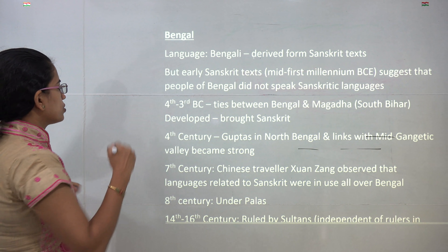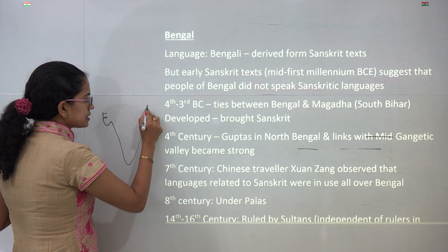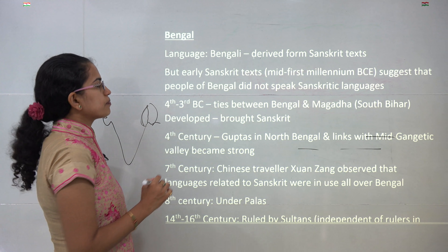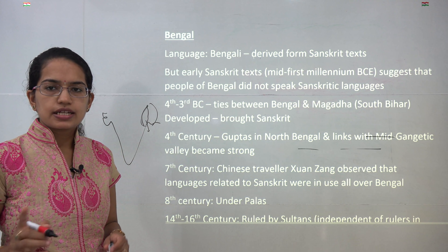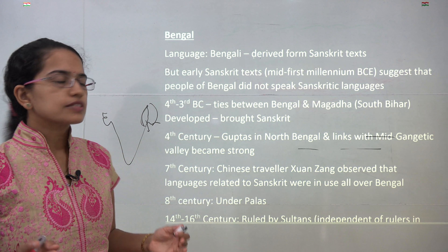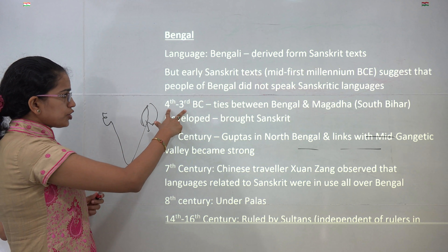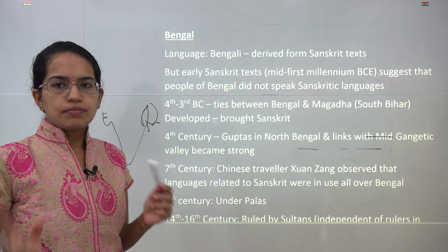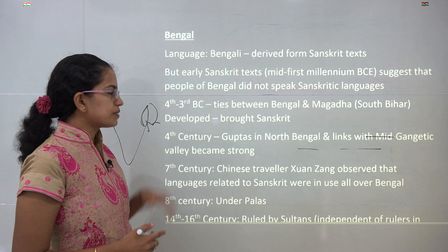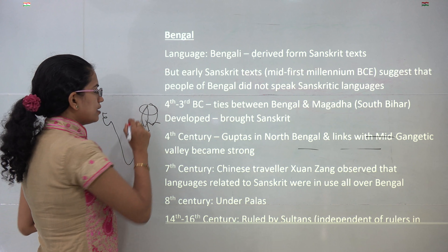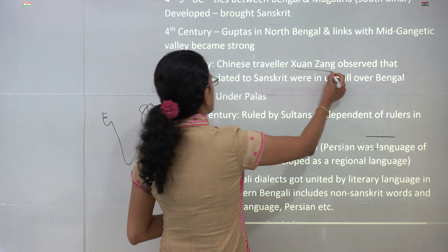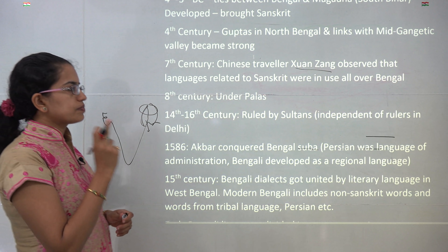Moving to the other corner of India is Bengal. The present-day West Bengal was part of Bengal which included West Bengal and East Bengal during that time. The predominant language was Bengali and most Bengali literature was derived from Sanskrit texts, though some was derived from tribal and other regional languages. During the 3rd and 4th century BC, Bengal and Magadha had good ties — Magadha occupied southern Bihar and brought Sanskrit into the region. During the 4th century, the Guptas occupied northern Bengal and their influence grew far and wide. During the 7th century, the Chinese traveler Xuanzang tried to relate the language to Sanskrit and spread it across Bengal.